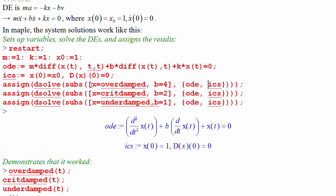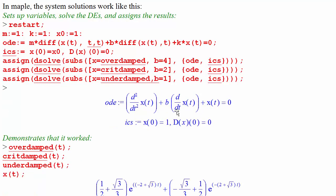We're going to call overdamped the solution of substituting b equals 4 into the ODE and the ICs and then dsolve that. We're going to call critically damped the solution of substituting b equals 2 into the ODE and ICs and assign that. And substituting b equals 1, we're going to call that solution underdamped. Assigning all of those.